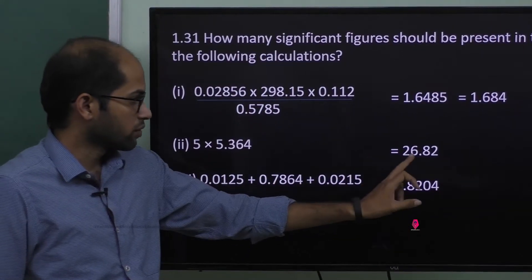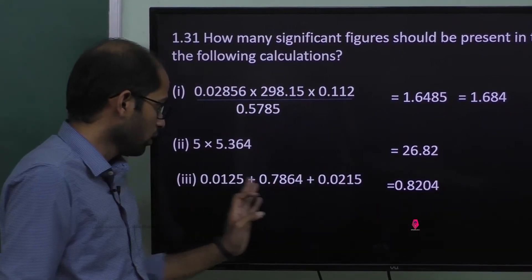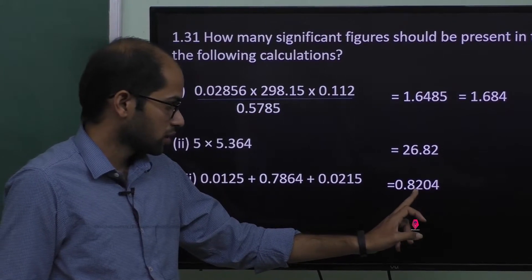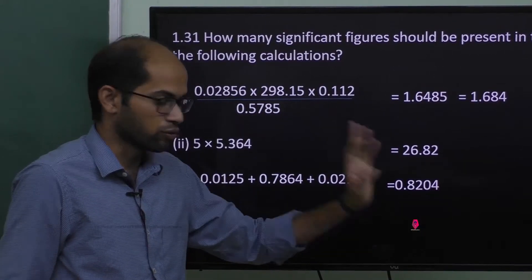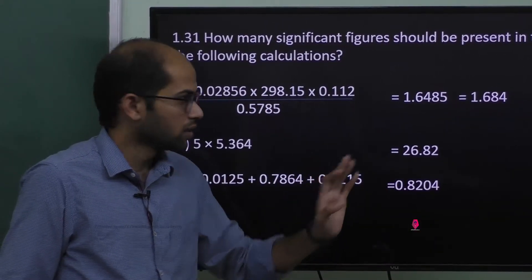This is 4 significant figures. 26.82 — the answer is 0.8204 — this is 4 significant figures.